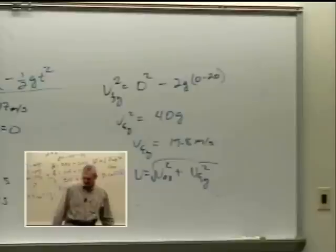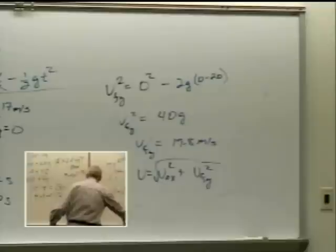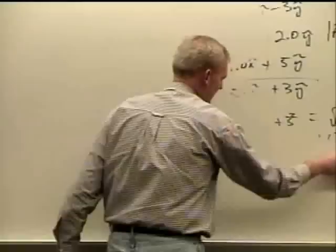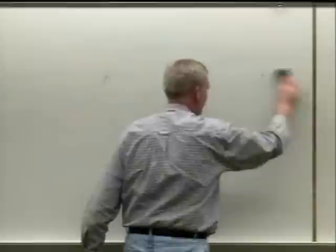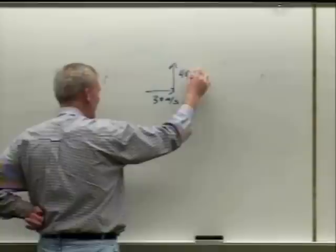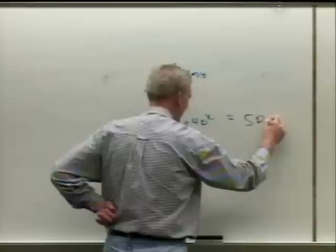Problem four confused people. If something is going 30 meters per second vertically and 40 meters per second horizontally, the initial speed is the square root of 30 squared plus 40 squared, which equals 50 meters per second.